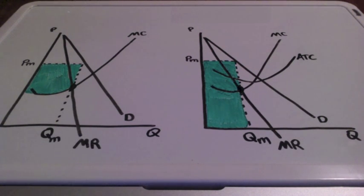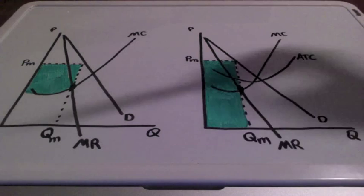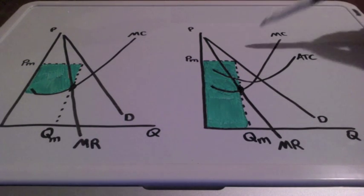In this lesson we're going to take a look at how to correctly label, find, and shade producer surplus for the monopoly and total revenue for the monopoly.